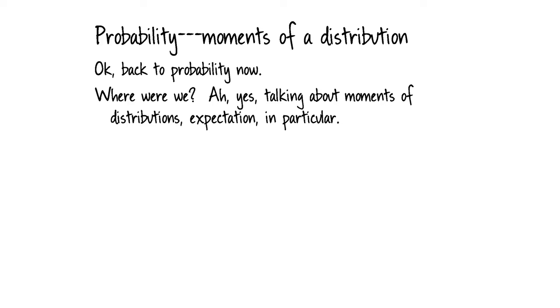Last time we finished up with the auction example, the extended auction example — that was a side trip into auction theory. We'll go back now to probability and pick up where we left off: talking about moments of distributions and about expectation in particular.